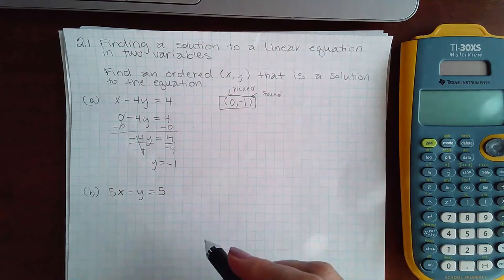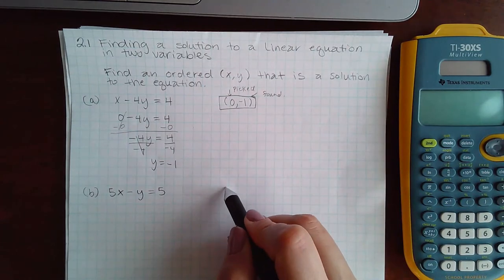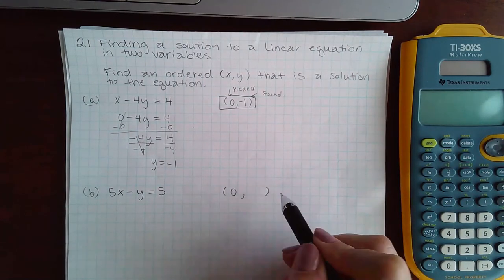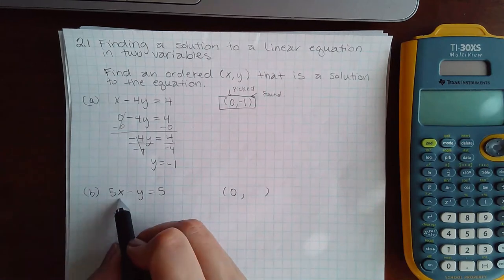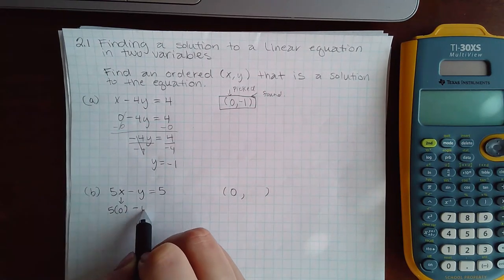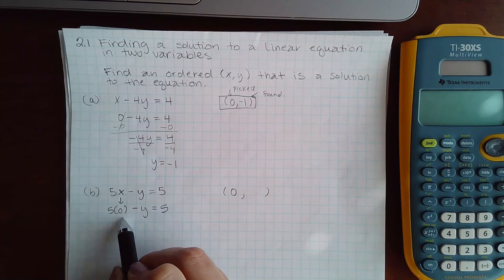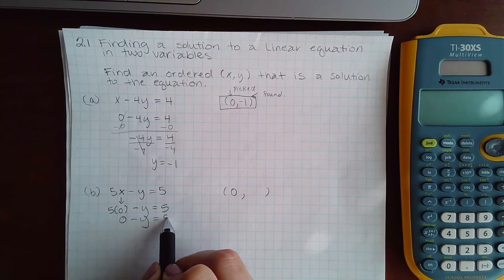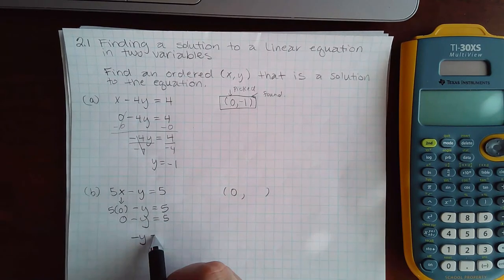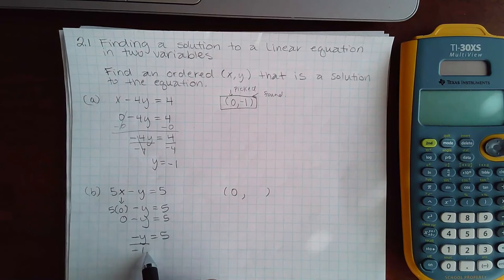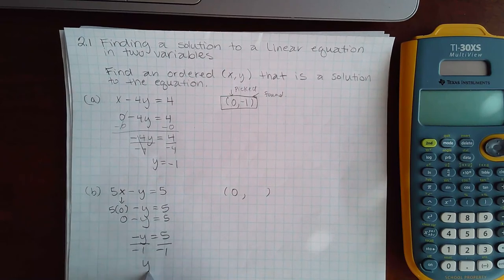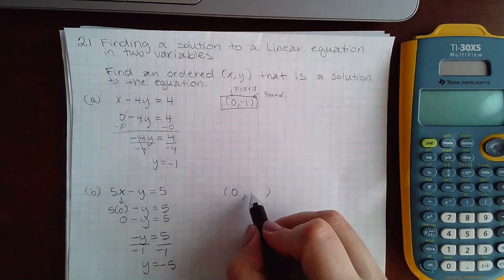I'm going to stick with that same method. I'm going to pick zero for x and then find y. Here, this means five times zero minus y. That means zero minus y, which is really like the zero is not even there. If I divide by negative one, I get y equals negative five.